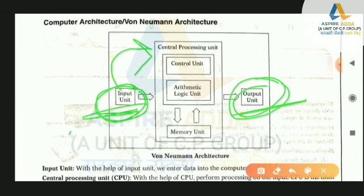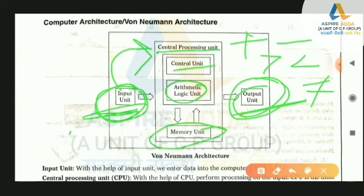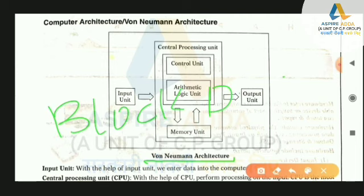پراسیسنگ یونٹ کو سی پی یو یعنی Central Processing Unit بولتے ہیں۔ اس میں ایک ہوتا ہے Control Unit جو چیزوں کو آنے جانے میں کنٹرول کرتا ہے، اور ایک ہوتا ہے Arithmetic and Logic Unit جو plus، minus، increment، decrement، equal to یا not equal to جیسے کام کرتا ہے۔ اس کے بعد کمپیوٹر چیزوں کو Memory میں سٹور کرے گا جسے Memory Unit بولتے ہیں۔ اس ڈائیاگرام کو Von Neumann Architecture یا Block Diagram of Computer بولتے ہیں۔